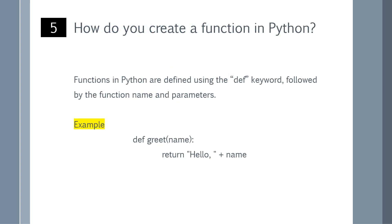How do you create a function in Python? Functions in Python are defined using the def keyword followed by the function name and parameters. You can refer to the example shown on the screen.